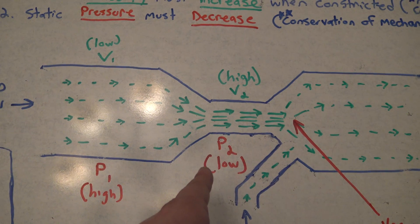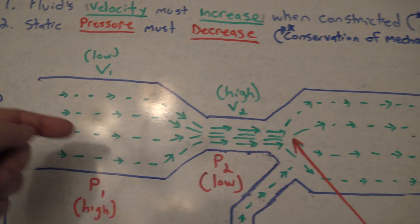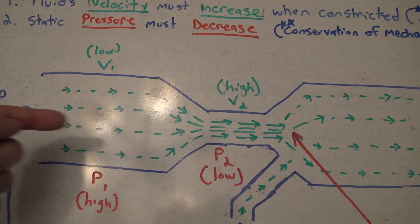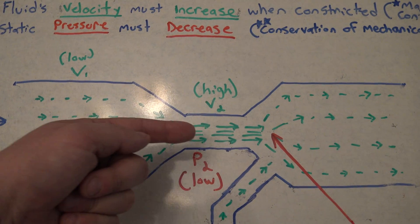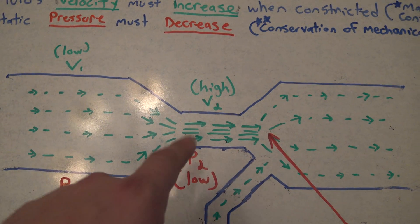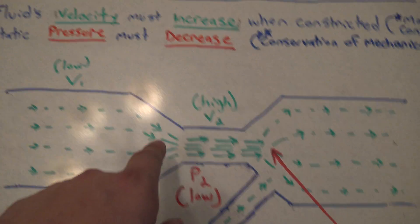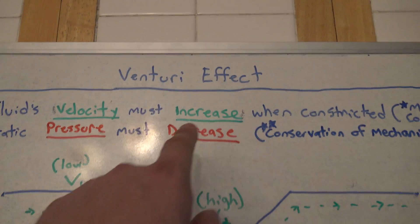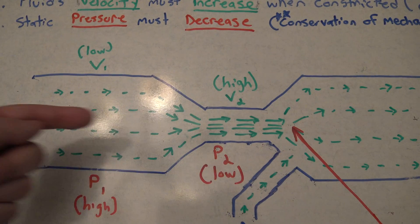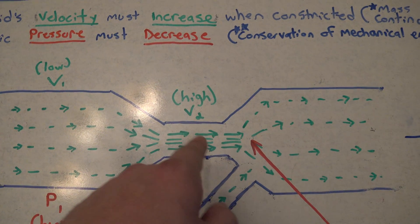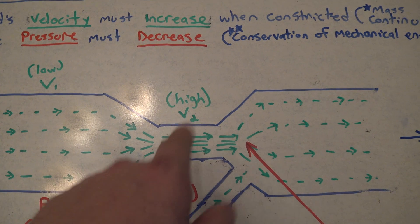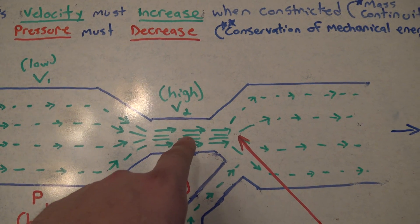Then what happens is we get to a constriction point, and the pump is pumping water in this direction. All of a sudden, this water has to speed up—the velocity must increase because all of that water and all that pressure has to get through a smaller point. It's being constricted.